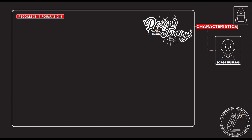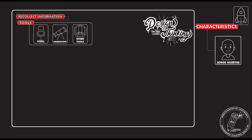The first data sheet we are going to see is the one for recollecting information. This is the way I do my data sheets. The first thing is I choose the tools that I use to recollect the information — whether it was a poll, an observation, or something else. Over there, I specify which tool I use.